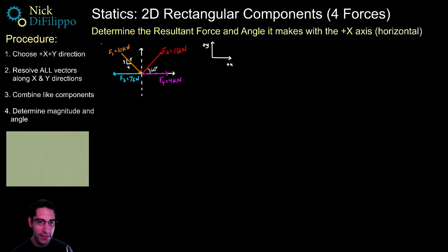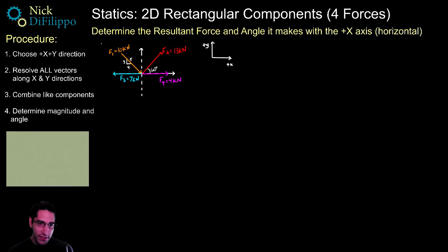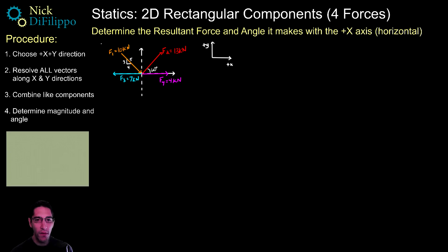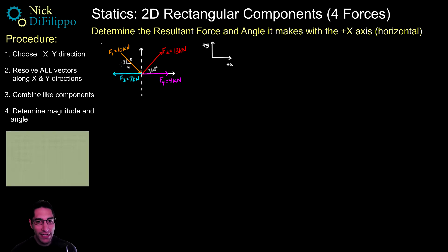Step two: resolve all vectors along the x and y directions. Before you start writing, just look at what these vectors are. F3 and F4 are already in the x direction — they have no y components, so they're easy. F1 and F2 are in the xy plane, so both of them are going to have an x and y component, or an i and j component.